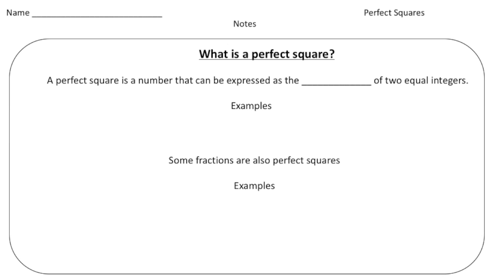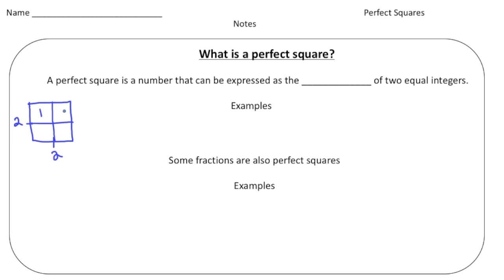What I want you to do over here on the left hand side of your notes is draw, to the best of your ability, a nice square. Remember, a square's length and width are the same — so not a rectangle, but a square. We're going to put a little mark here and a little mark here to show that these sides are the same. So let's say this side was two and this side was two.